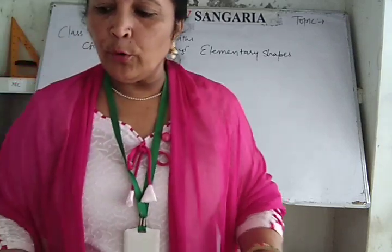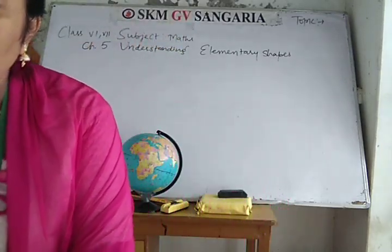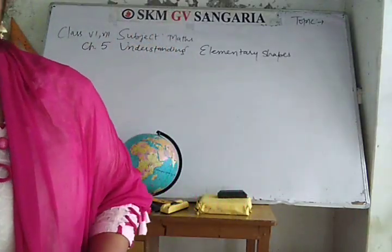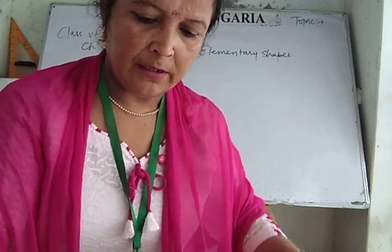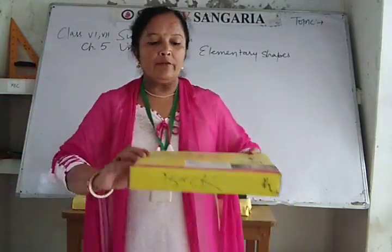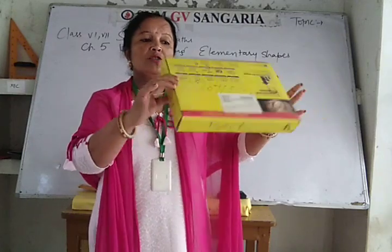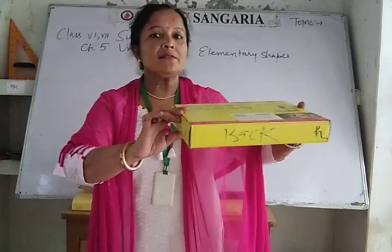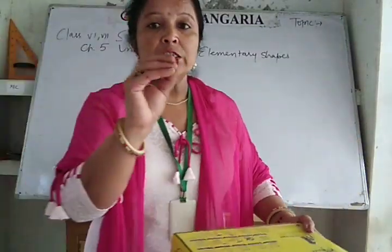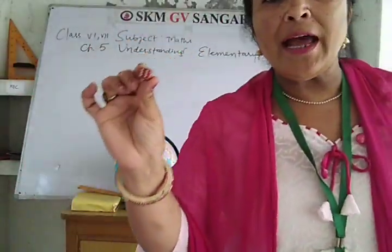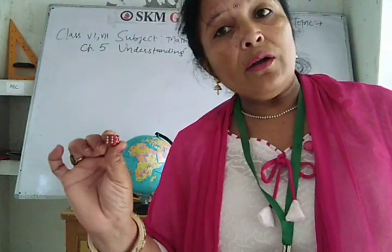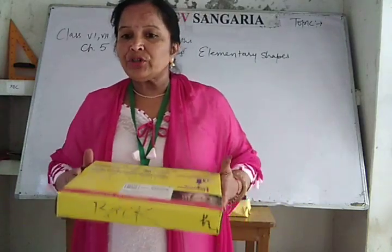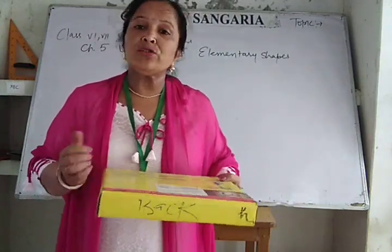And your math book — what is the shape of your math book? That is cuboid. And when you look at this box, what will you call this? It is a cuboid. And this Ludo dice, it will be called a cube. And your geometry box is also cuboid.